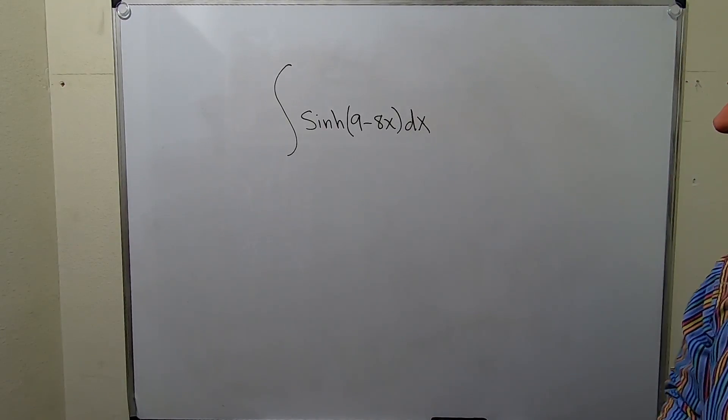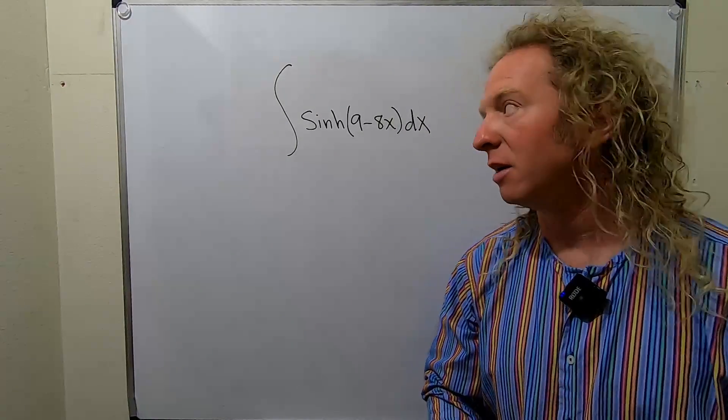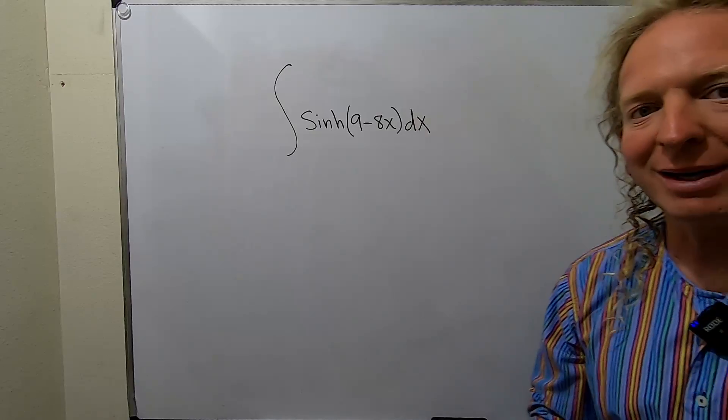In this problem, we're going to integrate sinh of 9 minus 8x. To do this, we're going to make a u-substitution.